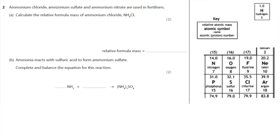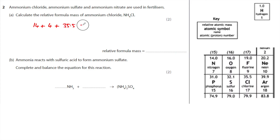Ammonium chloride, ammonium sulfate, and ammonium nitrate are used as fertilizers. Calculate the relative formula mass of ammonium chloride (NH₄Cl). Using the periodic table: one nitrogen (relative atomic mass 14), four hydrogens (each mass 1), and one chlorine (relative atomic mass 35.5). That gives a total of 53.5. It's really important to show your working.